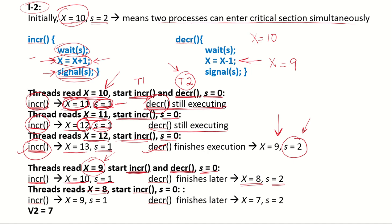Now 4 increments and 2 decrements are complete. In total there are 5 increments and 3 decrements needed. Both threads read x = 8; one starts the last increment and one starts the last decrement. The increment thread finishes earlier and prints 9 since it increments x. The decrement thread finishes later and prints x = 7 since it had also read x = 8 and decrements by 1. So the final value v2 = 7.